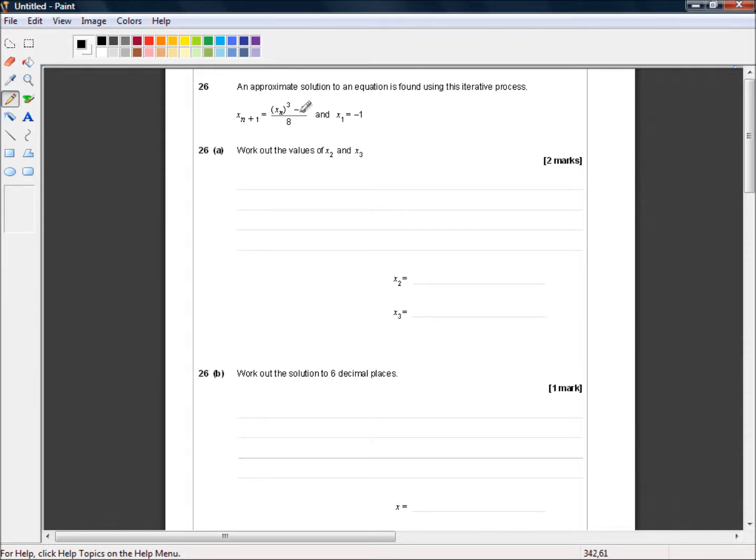It says an approximate solution to an equation is found using the iterative process. X sub n plus 1 equals x sub n cubed minus 3 all over 8, and x1 equals minus 1. Work out the value of x2 and x3.